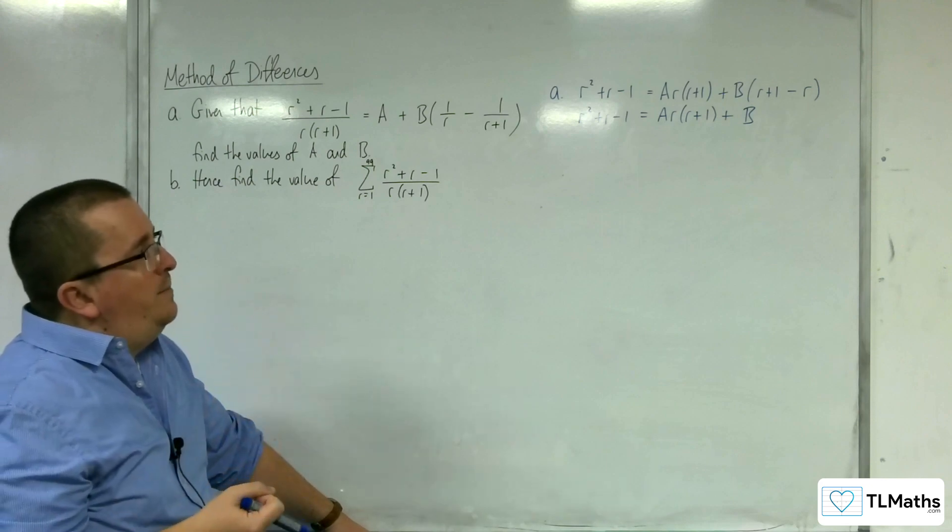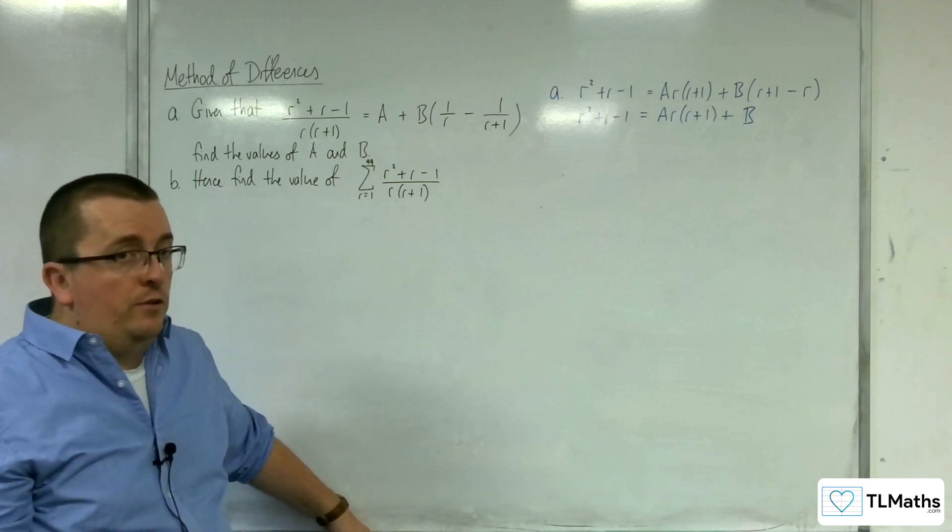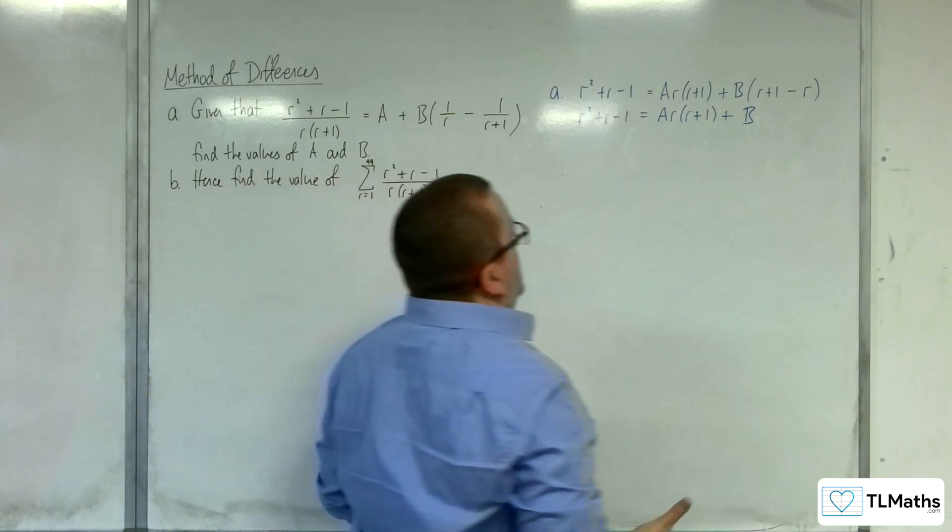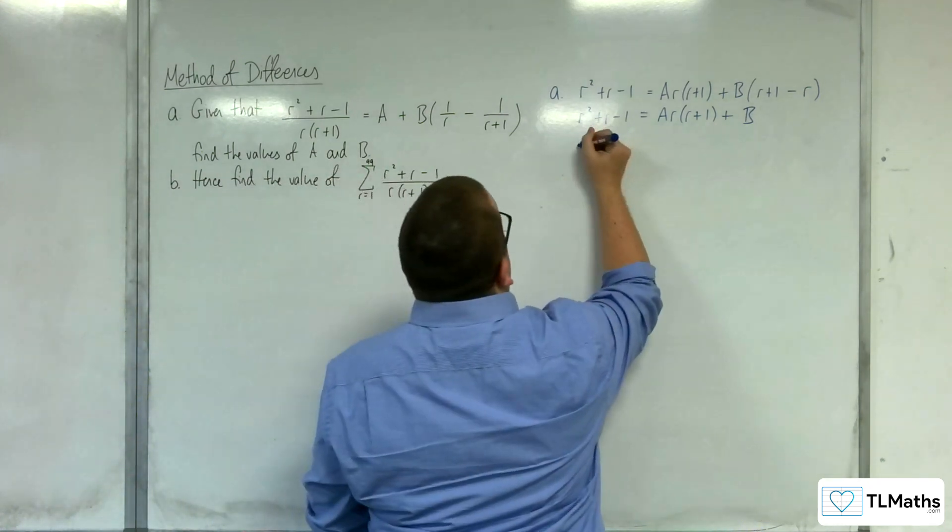So what about this next bit then? We've got to find the values of a and b, so you could do comparing coefficients if you wanted to. I'm going to substitute some values in, so let's substitute in r is 0.